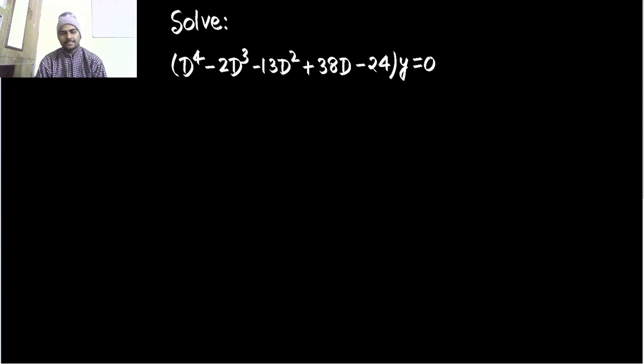That's why I'm taking this question—you can see the power of D is going up to 4, so the auxiliary equation will be somewhat complex and we'll have to calculate it carefully. First step as always is writing our auxiliary equation by replacing D with M, so you get M^4 - 2M^3 - 13M^2 + 38M - 24 = 0.